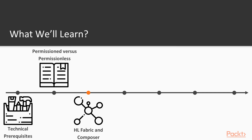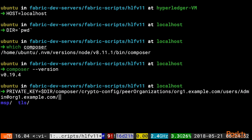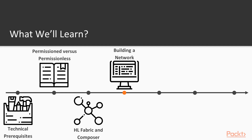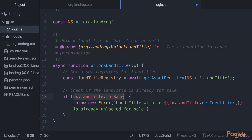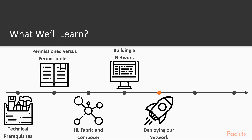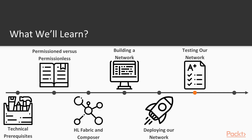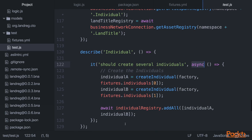In the third section, we will learn how to deploy a basic Hyperledger Fabric network to host our blockchain application. In the fourth section, we will learn how to build a Hyperledger Composer business network for land registration tracking and transfer. In the fifth section, we will learn how to deploy our Composer business network onto our Fabric blockchain. In the sixth section, we will learn how to test our Composer business network to make sure it works as intended.